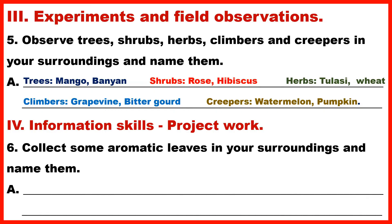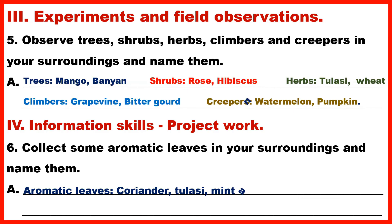Section 4: Information Skills / Project Work. Question 6: Collect some aromatic leaves in your surroundings and name them. Answer – Aromatic leaves: Coriander, Tulsi, Mint and Curry Leaves.